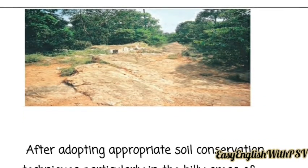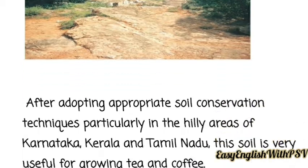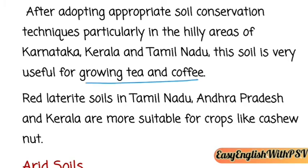After adopting appropriate soil conservation techniques, particularly in hilly areas of Karnataka, Kerala, and Tamil Nadu, this soil is very useful for growing tea and coffee. Red laterite soil in Tamil Nadu, Andhra Pradesh, and Kerala is also more suitable for crops like cashew nut.